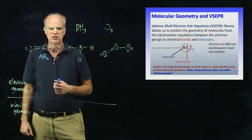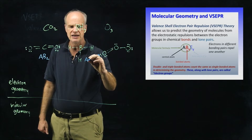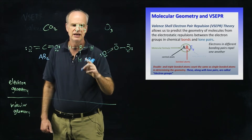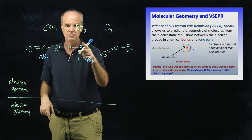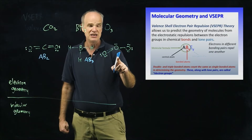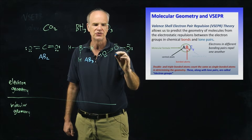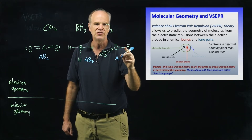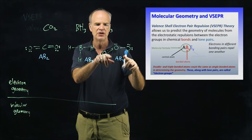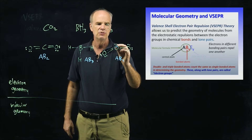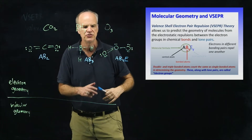For BH₃, the central boron has three peripheral hydrogen atoms and no lone pairs, so it's AB3. For ozone, the central oxygen is A, there are two peripheral oxygen atoms giving B2, and the central oxygen has one lone pair, so ozone is AB2E.